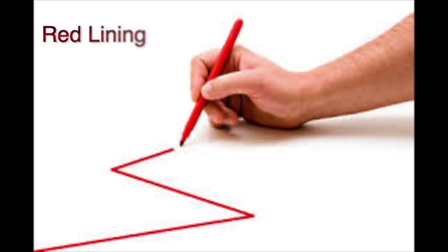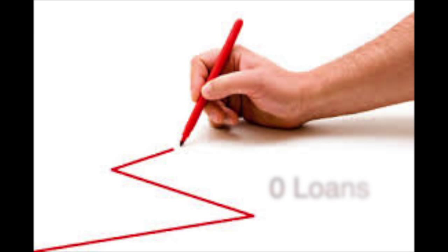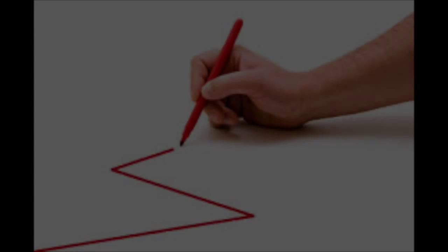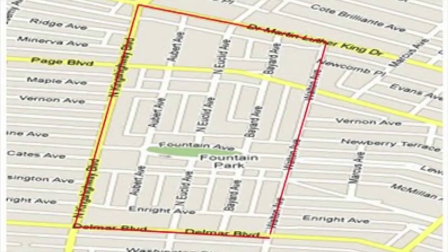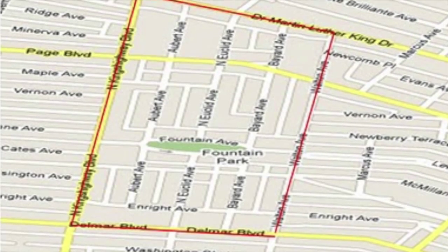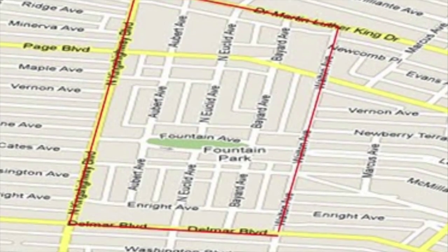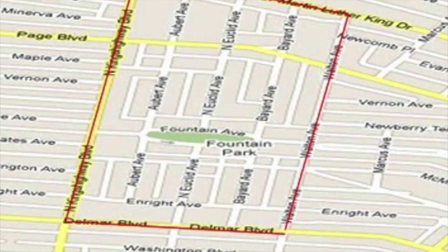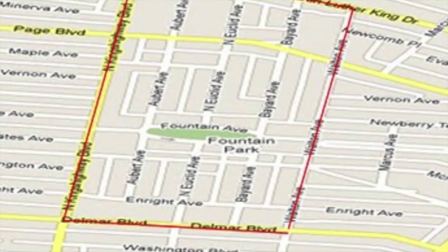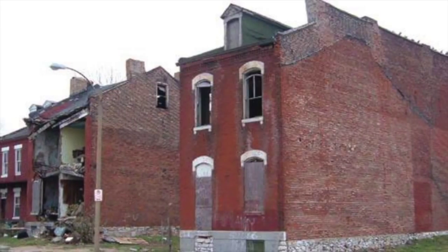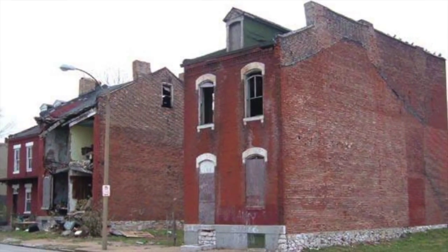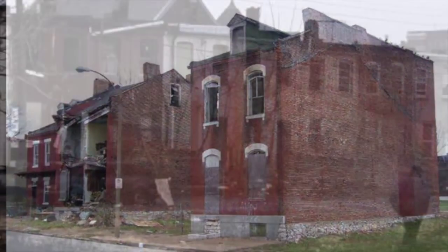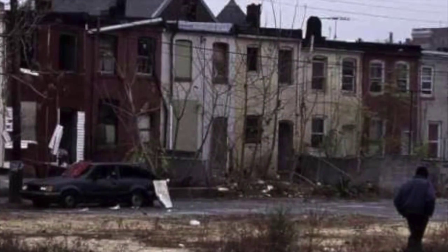Redlining, a common market strategy used by banks in the 1960s and 1970s, took place and prevented African Americans from obtaining bank loans to improve their homes, as well as preventing them from moving westward. Banks would mark a red line on a map to delineate where they would not invest. This created a perception that neighborhoods were in decline, and in time, the perception became a reality.